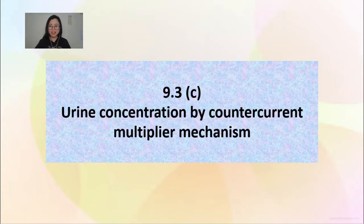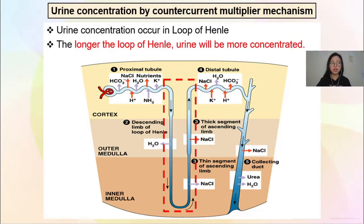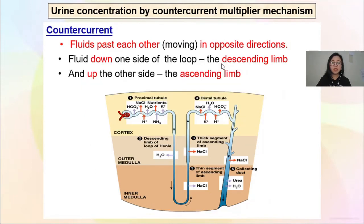Always do not hesitate to ask questions or to ask friends or roommates for tips and discussions. When we talk about urine concentration, we're talking about making the urine more concentrated. We are going to do this with the mechanism called counter current multiplier mechanism. This process happens in the loop of Henle — the longer your loop of Henle, the more concentrated your urine will be. Let's first understand the two keywords in this name. The first keyword is counter current.